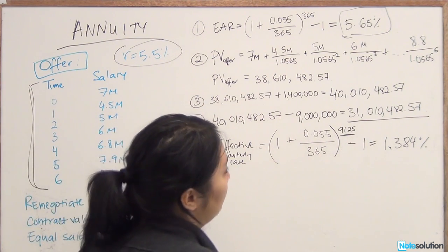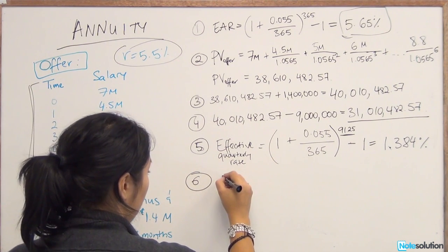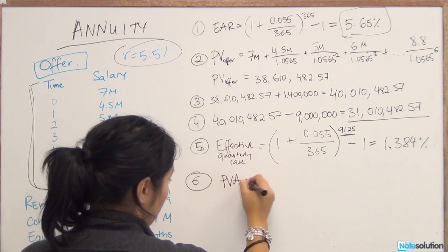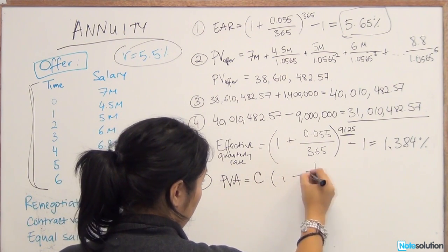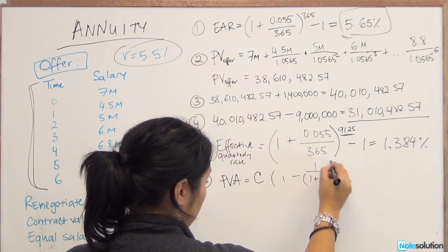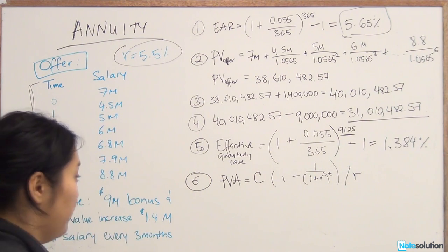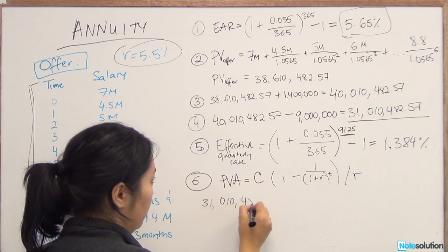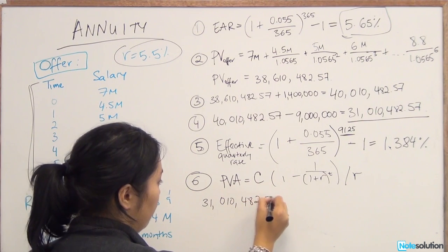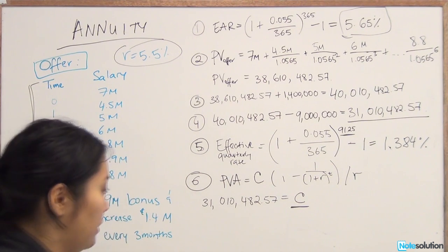So this is the present value, $31,010,482.57. We know that the present value in the annuity equation is PVA. And we can finally substitute all the terms that we already have here. So the present value in the annuity is equal to C. That's our quarterly cash flow. That's what we're trying to calculate.